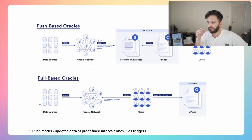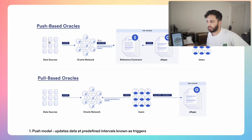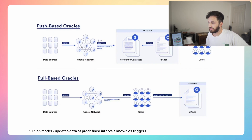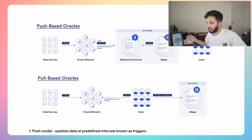There are two main kinds of architectures for oracles in terms of how they work. It all starts with data sourcing — you need somewhere that will get this data, whether it's a centralized exchange or somewhere else. With push-based oracles, data is fetched by the oracle network and then delivered on-chain to a smart contract. Once it's on the blockchain, various apps and users can access this information. Usually it's the apps that fetch this information, and then users can interact with those apps just like on Aave.